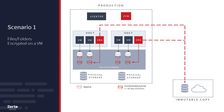Every data change on a virtual machine is tracked and saved to checkpoints in a user-defined journal. Those checkpoints are made as fast as possible and typically happen every 5 to 15 seconds. When the predefined journal history is reached, whether that's 5 days or 30 days, the changes are pushed to replicas.